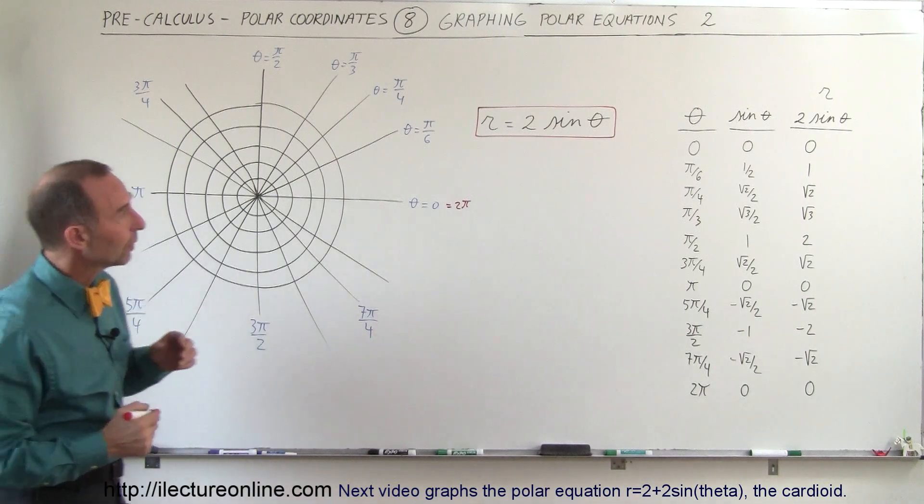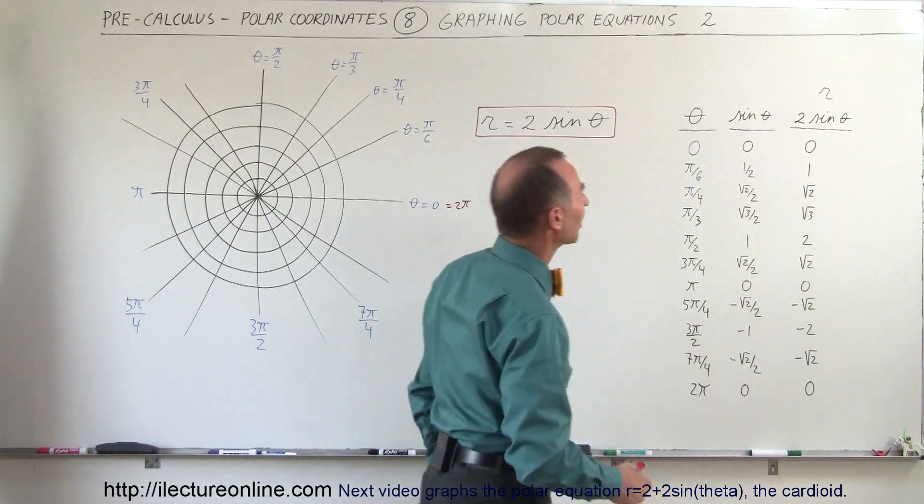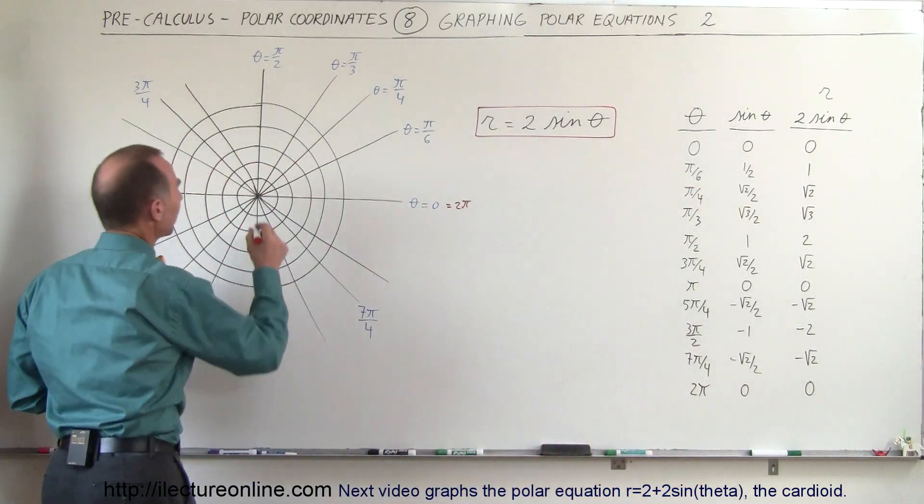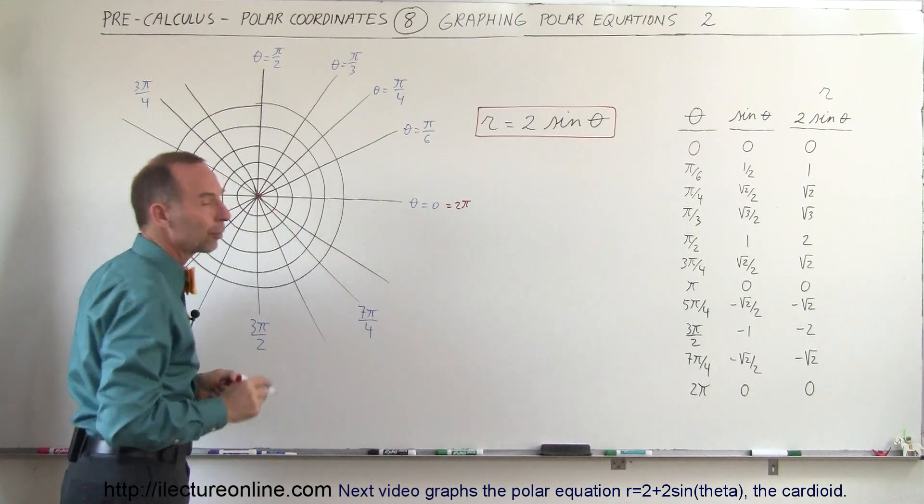When theta is equal to 0, sine of theta is equal to 0, and therefore 2 times sine of theta equals 0. This means when theta equals 0 in this direction, the radius is 0, so there's a point right there.